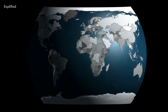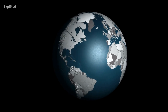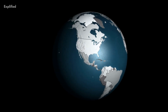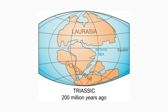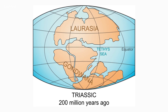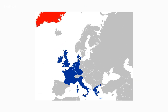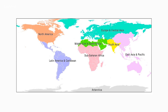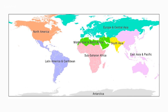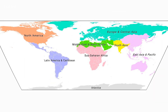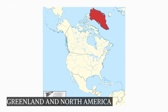The continents continued to migrate toward their current positions during the Paleocene. Laurasia had not yet split into three continents. Europe and Greenland remained united, North America and Asia were still connected by a land bridge on occasion, and Greenland and North America were beginning to separate.